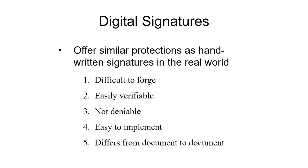Digital signatures can be used to identify something as your own. The concept is to be similar to a handwritten signature. You want it difficult to forge, and you want somebody to be able to easily check that it is in fact you. Non-repudiation means that once you sign something you can't deny that you did it. It should be easy to implement and different from document to document — something you can't just copy from one document to another.